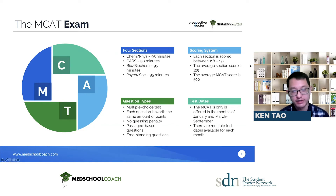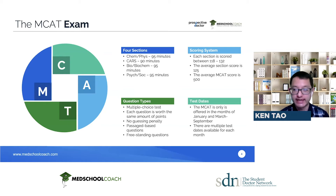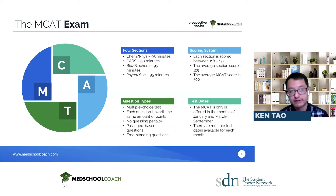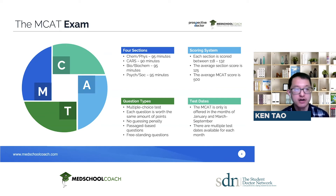Next, the scoring system. There are four sections of the exam, and each section receives a score between 118 to 132. Right in the middle of that range is 125, which is the average section score. This was selected intentionally by the AAMC so that a student who gets an average score in all four sections gets a perfect 500. This makes it very convenient for medical school admissions committees to determine if a student is above average — scores in the 500s — or below average — scores in the 400s.